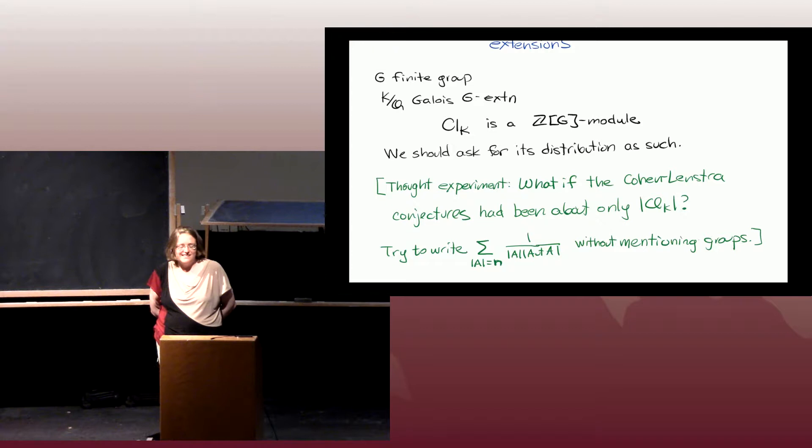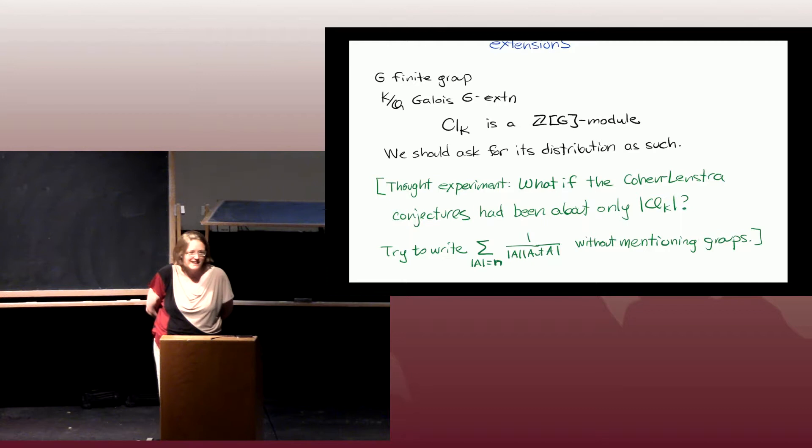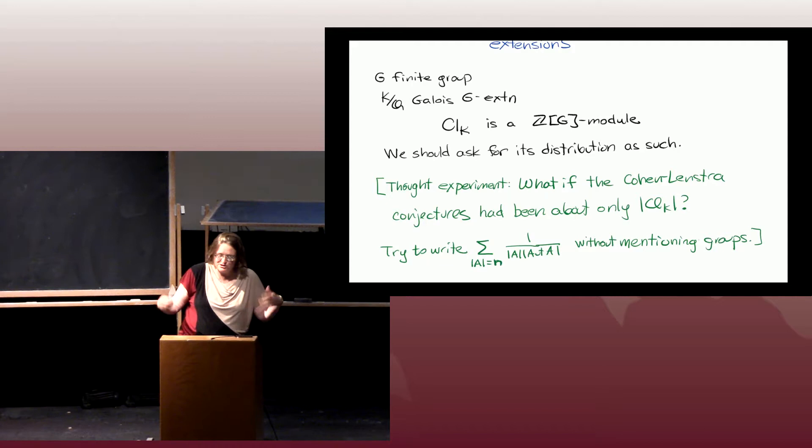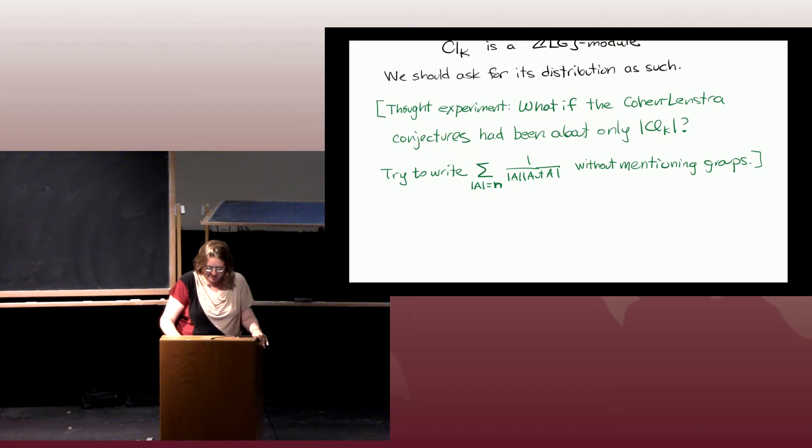Similarly, the conjectures for class groups of quadratic fields look much nicer and more sensible when you think about them as distributions on groups and not on numbers that record the size of the group. We should think about distributions for class groups with the full structure that they have. So in this case, for Galois G extensions, that is as a ZG module.